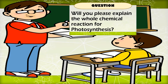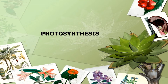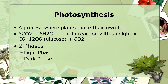So photosynthesis comes from the word photo, which means light, and synthesis, which means putting up together. Photosynthesis is a process where plants make their own food. In order for it to make their own food, we will be needing 6 carbon dioxide, 6 water molecules, in order to yield 1 unit of glucose, which is C6H12O6, and 6 units of oxygen. And it requires radiant energy in the form of sunlight.